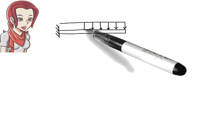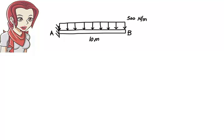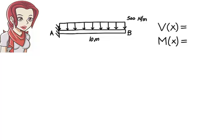Let's consider a more interesting problem. Suppose we have a cantilever beam subjected to a uniformly distributed load. Here, we wish to come up with algebraic equations for calculating shear and moment at any point in the beam — that is, an equation V(x), where x is the position of an arbitrary point. When we substitute a value for x, it gives the shear at that point. We also want a similar equation for bending moment M(x). In other words, we want to represent shear and moment in the beam algebraically.